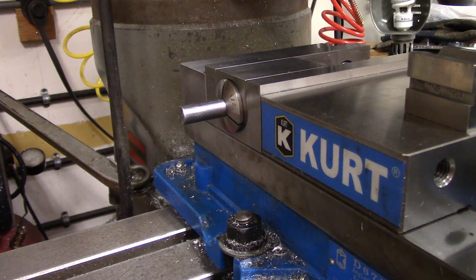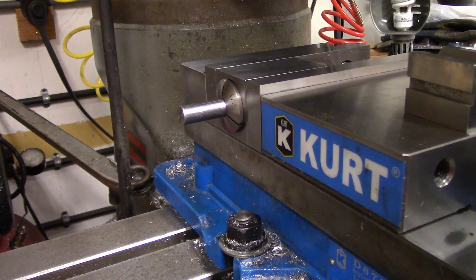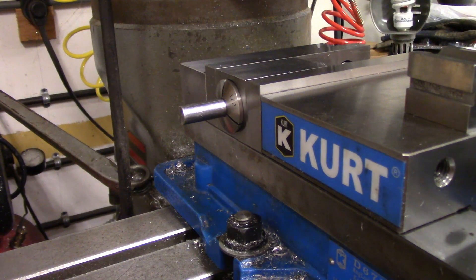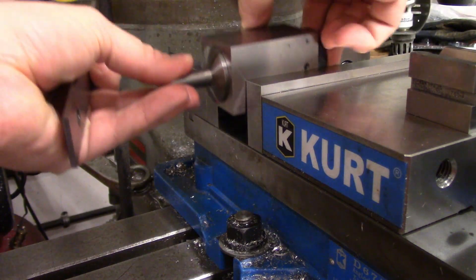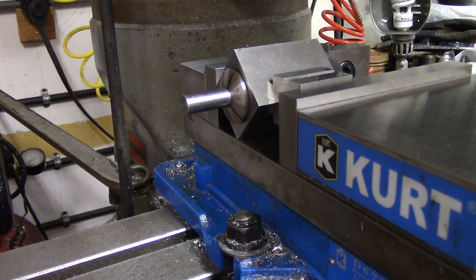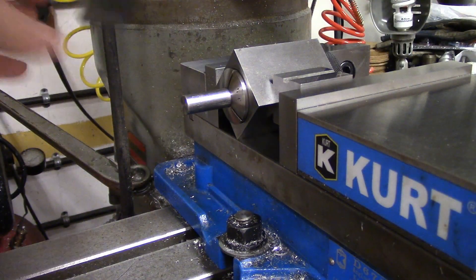In use, the blocks are held in the mill vise and flipped to the different sides to index the part. The 4 sided block allows easy indexing to 90 or 180 degrees, as well as 45 degrees if you use a V block on the corner.